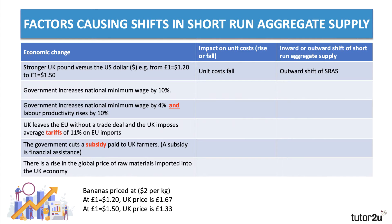But if the pound appreciates to one pound buying one dollar fifty, that two-dollar kilogram of bananas would only cost one pound thirty-three coming into the UK. So a stronger pound — an appreciation of the exchange rate, ceteris paribus — will cause the price of imported goods and services to go down. For many suppliers that means lower unit costs: the cost of imported energy, food and drink, and technology falls. If unit costs go down, the aggregate supply curve shifts outwards.